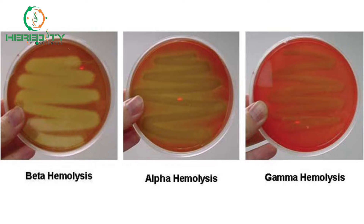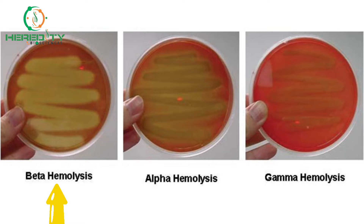In alpha hemolysis, there is partial lysis of RBCs producing a greenish-grey or brownish discoloration around the colonies. In beta hemolysis, there is complete lysis of RBCs, resulting in a distinct clear colorless zone surrounding and under the colony. In gamma hemolysis, there is no hemolysis of RBCs and no change in the medium surrounding the colonies.